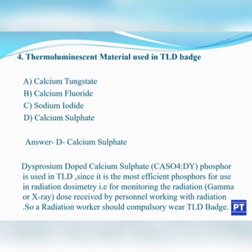Calcium sulfate is used for monitoring the radiation — both gamma and X-ray — received by personnel working in radiation environments. A radiation worker should compulsorily wear a TLD badge. The material used in this TLD badge is calcium sulfate, which is more sensitive and efficient in monitoring radiation.